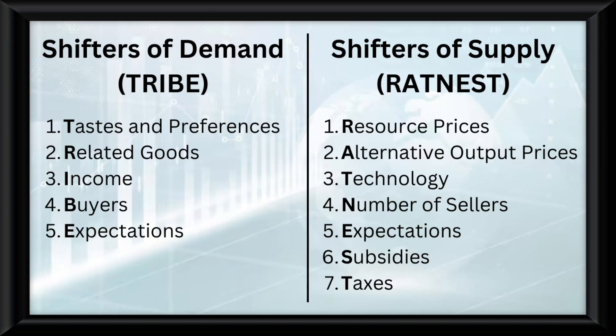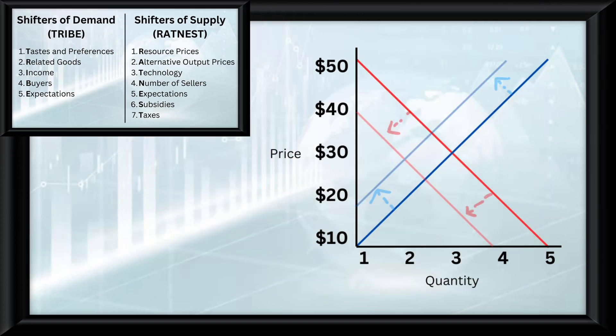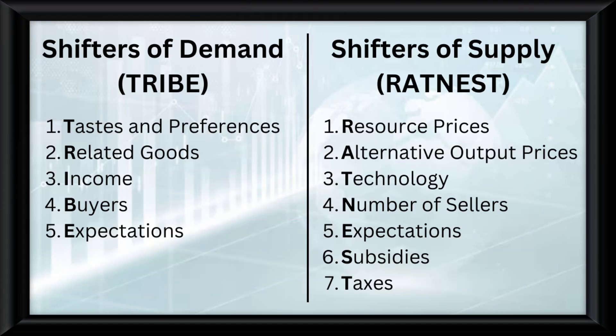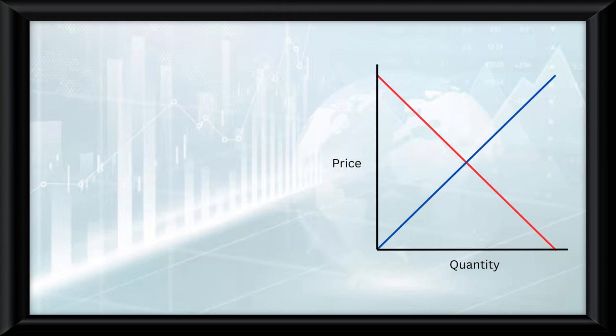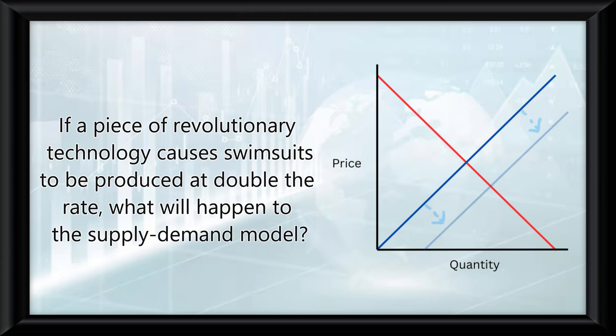On the screen now are the shifters of demand and supply. These things are what cause the entire demand and supply curve to shift. And honestly, you need to memorize them. If you were given a question like, If a piece of revolutionary technology causes swimsuits to be produced at double the rate, what will happen to the supply-demand model? The simple answer is, the supply curve would shift to the right because more swimsuits are being supplied.